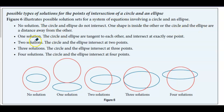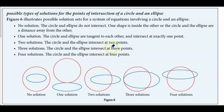We have one solution where the circle and the ellipse are tangent to each other and intersect at exactly one point. We have two solutions where the circle and the ellipse intersect at two points.